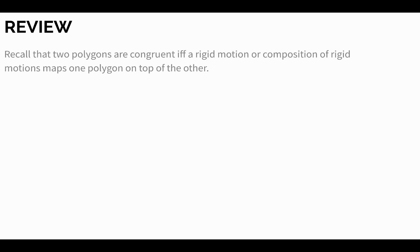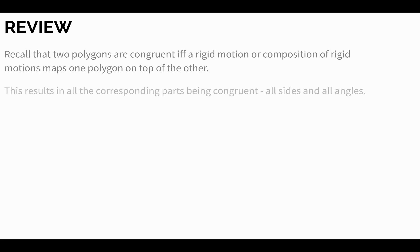Recall that two polygons are congruent if and only if a rigid motion or composition of rigid motions maps one polygon on top of the other. So if they can fit right on top of each other, then they're congruent. When you have two congruent polygons, one thing that results is that all the corresponding parts are going to be congruent. The parts are the sides and the angles of the polygons.